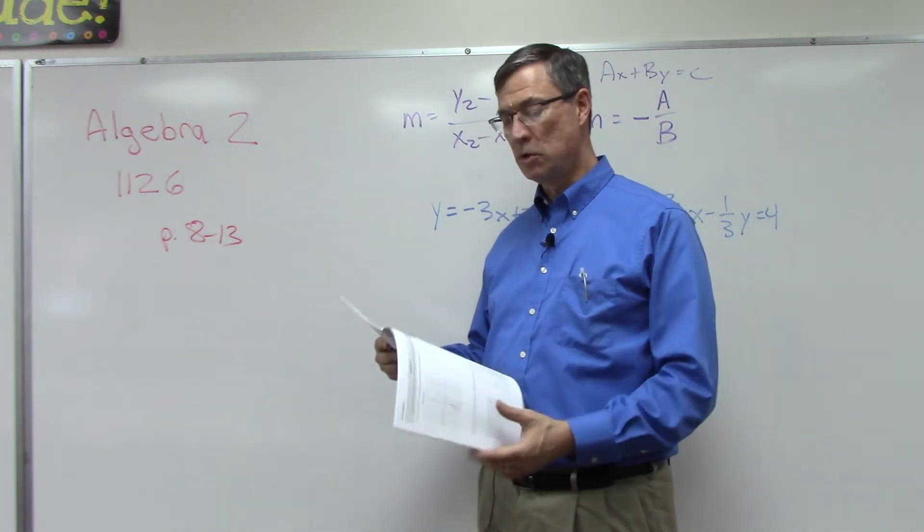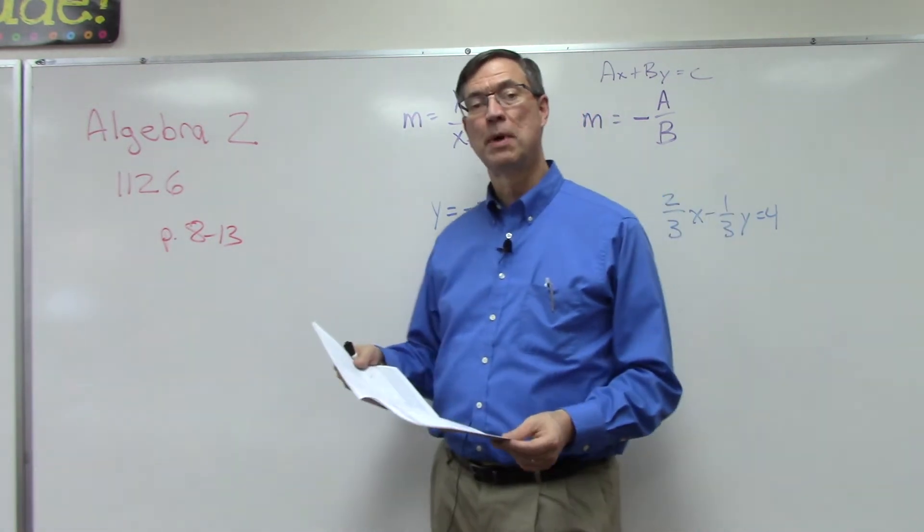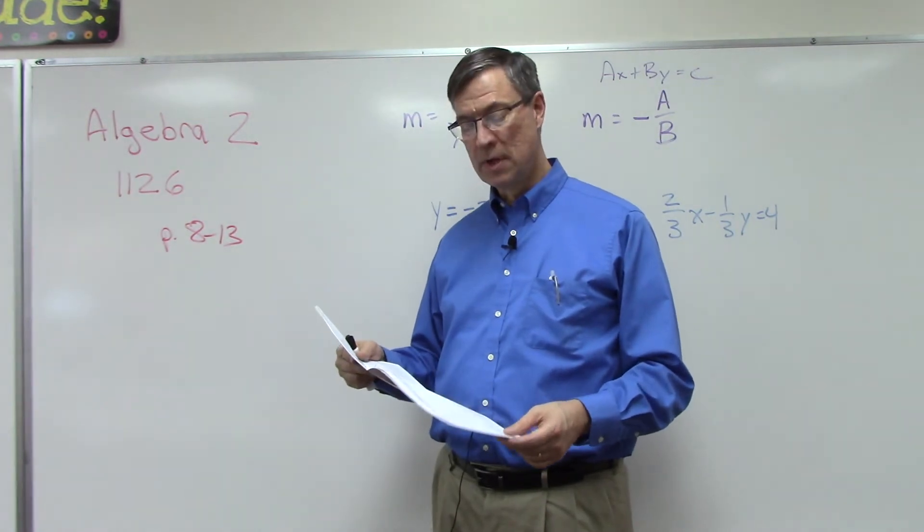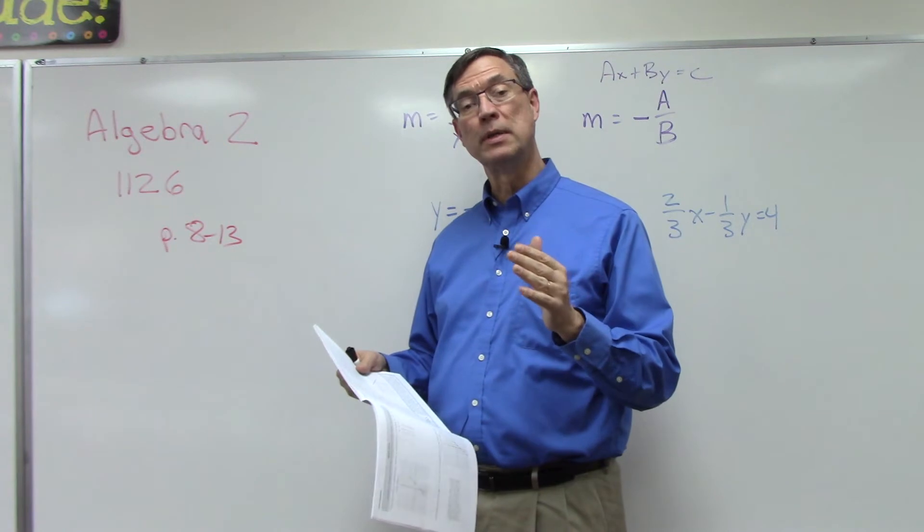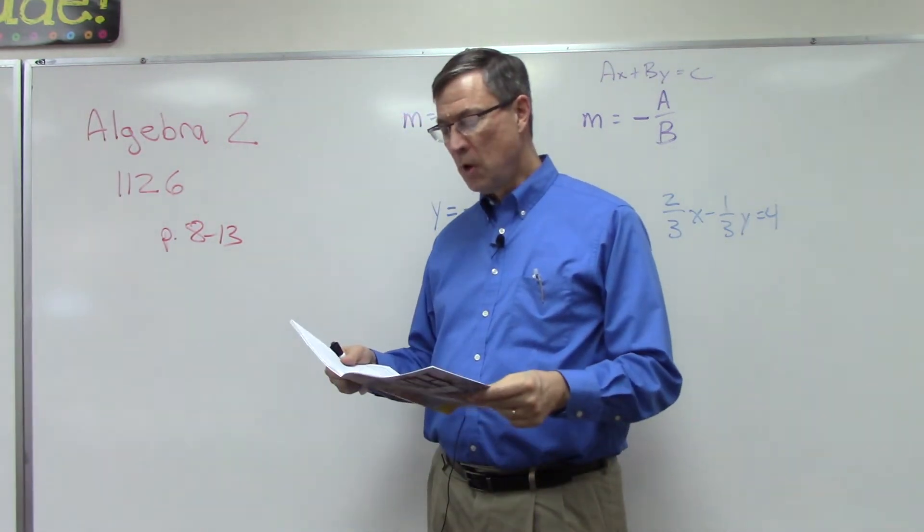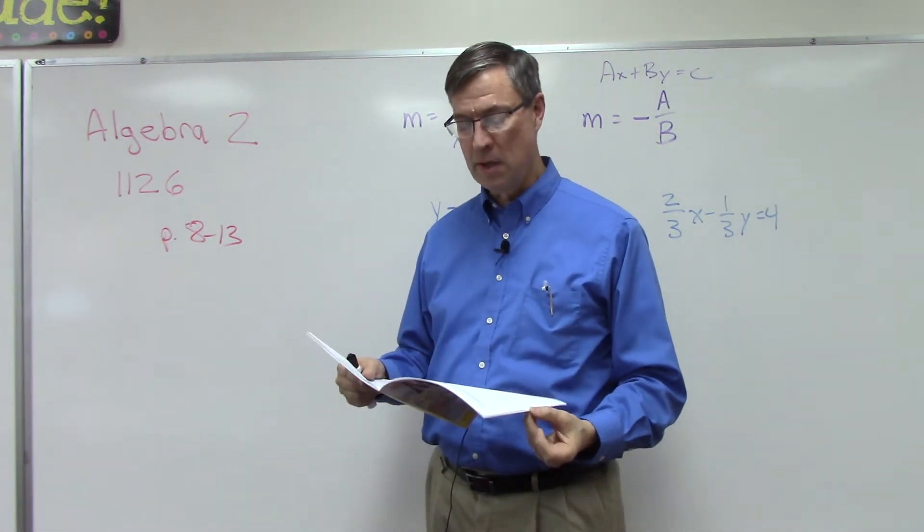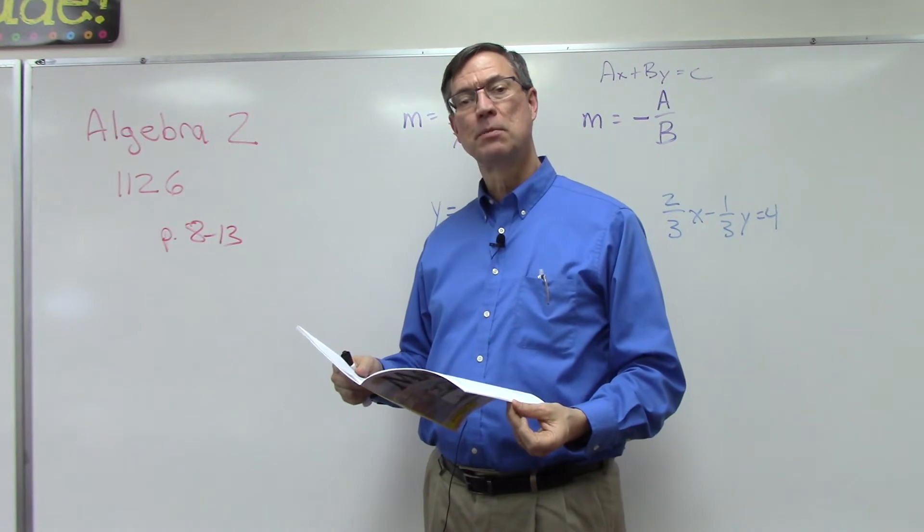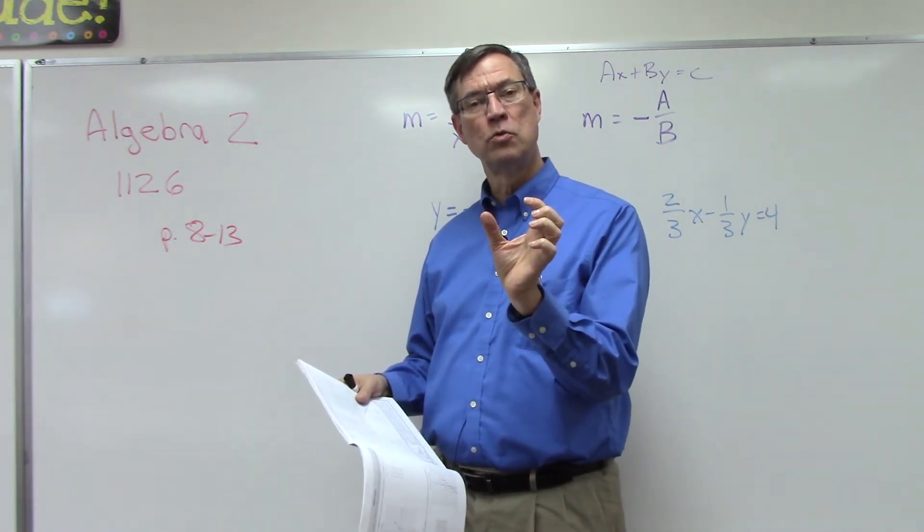You make up values for x and then solve the equation to find the corresponding y values. Each of those pairs of numbers becomes a point that you can put on the graph and connect them with a line. I would suggest always always always plugging in zero for x. That makes it easy, and then plug in some other numbers that are close to that, so like 1, 2, maybe negative 1, negative 2.